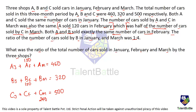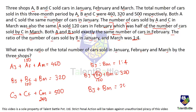The ratio of cars sold by B in January and March was 1 to 4. Total cars sold by B in January and March combined: 320 minus 120 equals 200. Dividing 200 in ratio 1 to 4 — in January: 1 divided by 5 times 200 equals 40 cars; in March: 200 minus 40 equals 160 cars.